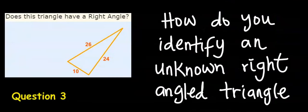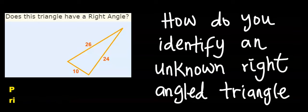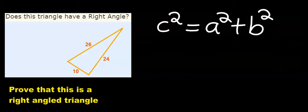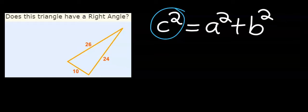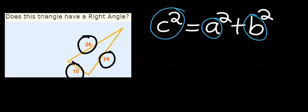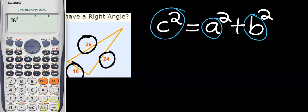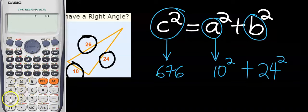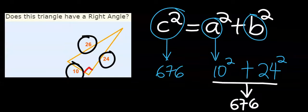How do you identify an unknown right-angled triangle? We know that when we square the longer side, the answer will be the same as when we square the remaining sides and add them. For sides 10, 24, and 26: squaring 26 gives 676. Squaring the remaining sides, 10 squared plus 24 squared, gives the same answer — hence this is a right-angled triangle.